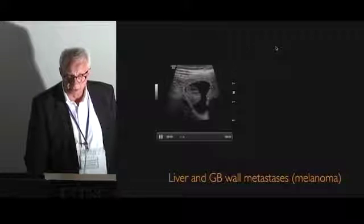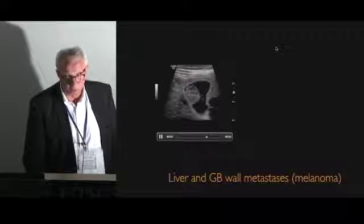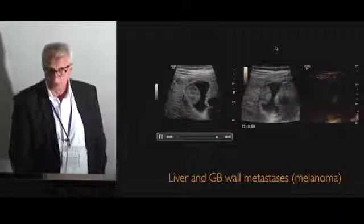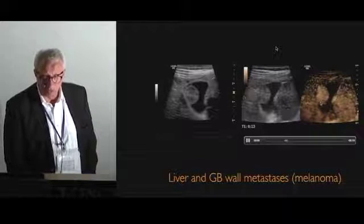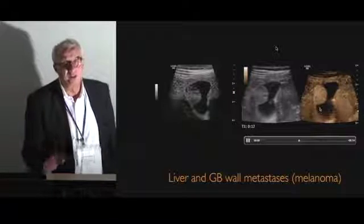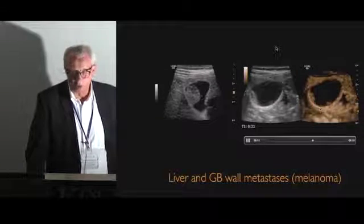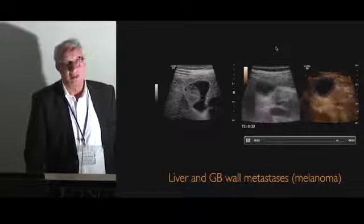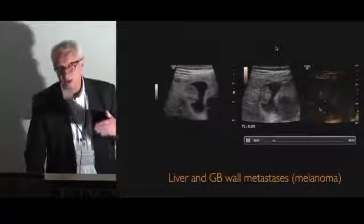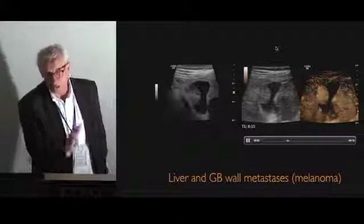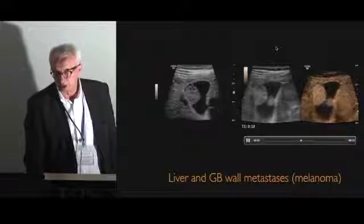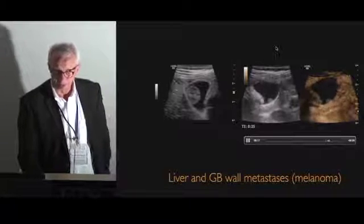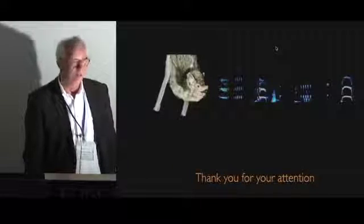My last case: a patient with malignant melanoma. When we looked at the gallbladder, we could see a tumor mass — not the only one; we counted four or five masses, this being the biggest. With contrast, it was interesting to see the behavior: the bubbles run from the gallbladder wall into the tumor but do not invade the liver. We now have four or five patients with metastasis from melanoma into the gallbladder wall, and they all behave the same on contrast — the tumor grows from the wall into the lumen of the gallbladder without infiltrating the liver. Thank you very much for your attention.